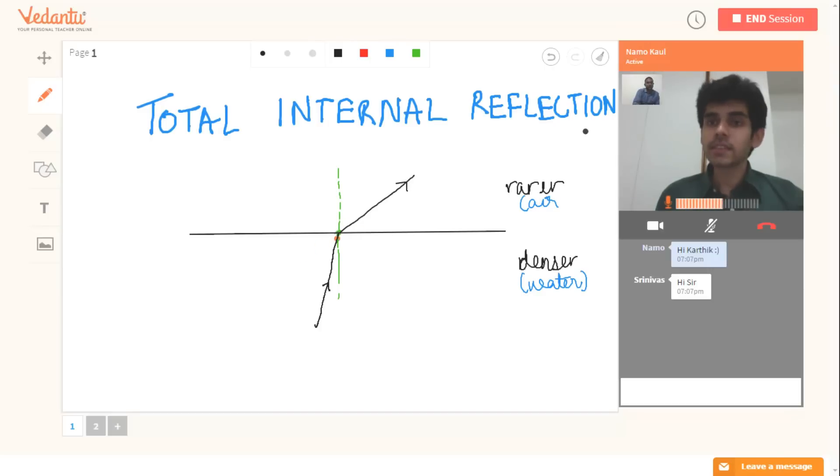Now if I increase this angle of incidence a little bit, can you tell me what would be the refracted ray? So it will move further away. So it will move further away. Perfect. So this is the way these rays would be.